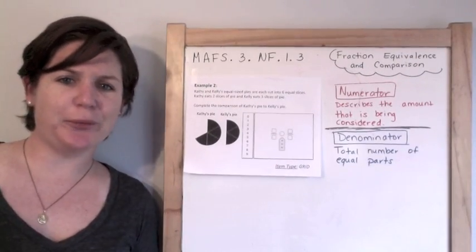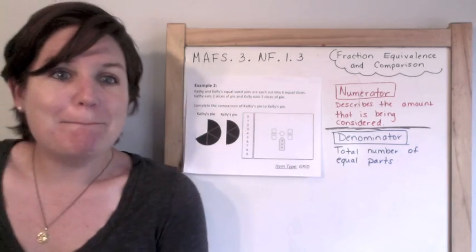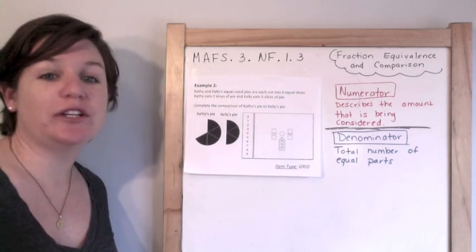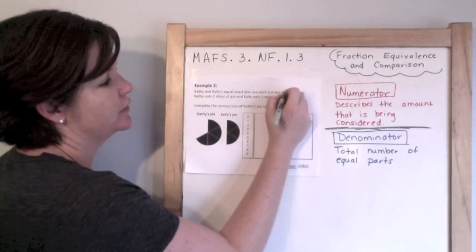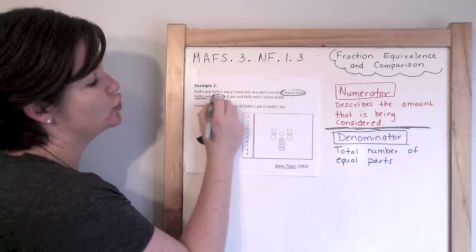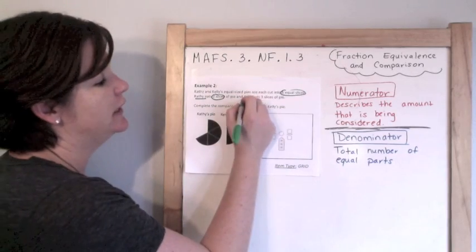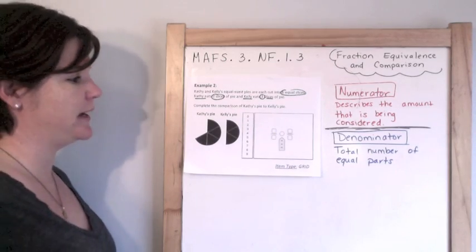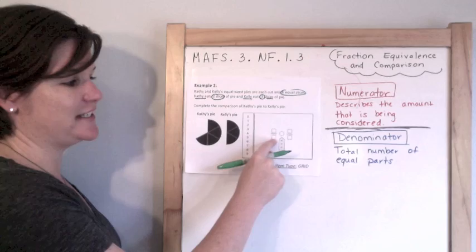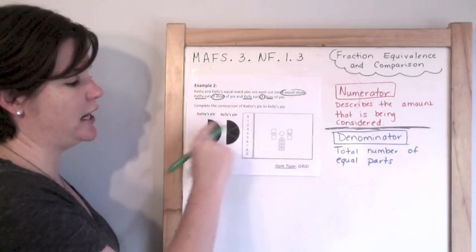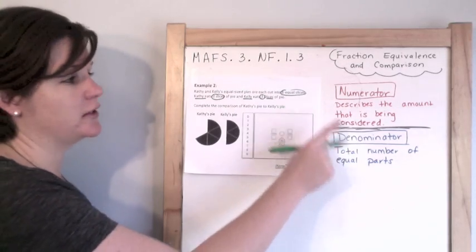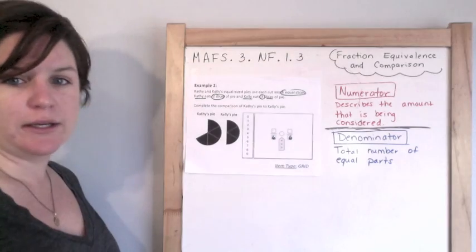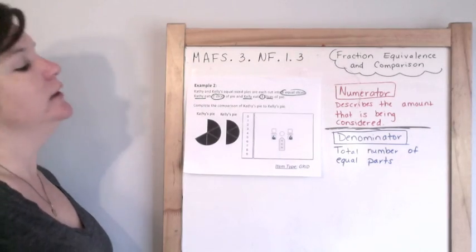We're already on number two. Kathy and Kelly's equal size pies, yummy pies, I love pies, apple pie, are cut into six equal slices. Kathy, so they're cut into six equal slices. Kathy eats two slices of pie and Kelly eats three slices of pie. Complete the comparisons of Kathy's pie to Kelly's pie. So, first let me figure out my denominators down here. Here's their pies and they told me that the total number of equal parts was six slices. So, bloop, bloop, denominator is six.